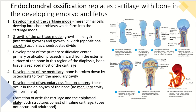There are a few more steps when talking about endochondral ossification. This is the type of bone formation that replaces cartilage with bone in the developing embryo or fetus. The first step is the development of the cartilage model, when mesenchymal cells develop into chondroblasts, which form the cartilage model.